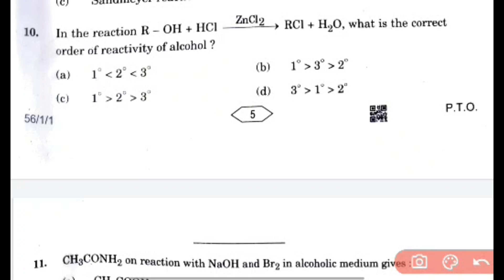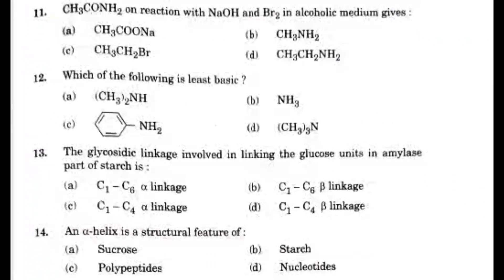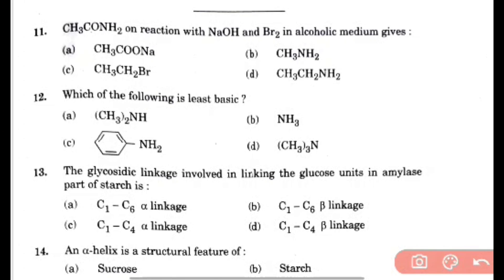CH3CONH2, amide hai, uska NaOH ke saath reaction kara, we will get CH3NH2, that is amine. Then least basic is this one, phenyl ring, aniline.